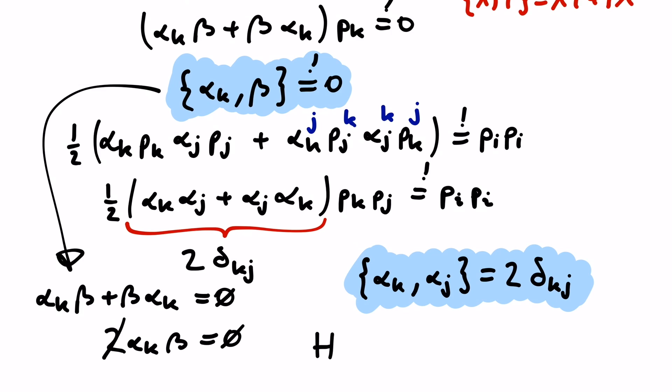But if we remember our ansatz for the Hamiltonian, this means that either the momentum or the mass drops out, and that can't be. So the smart thing that Dirac noticed was that if alpha and beta are not numbers but matrices, we can fulfill this condition without alpha and beta being zero.